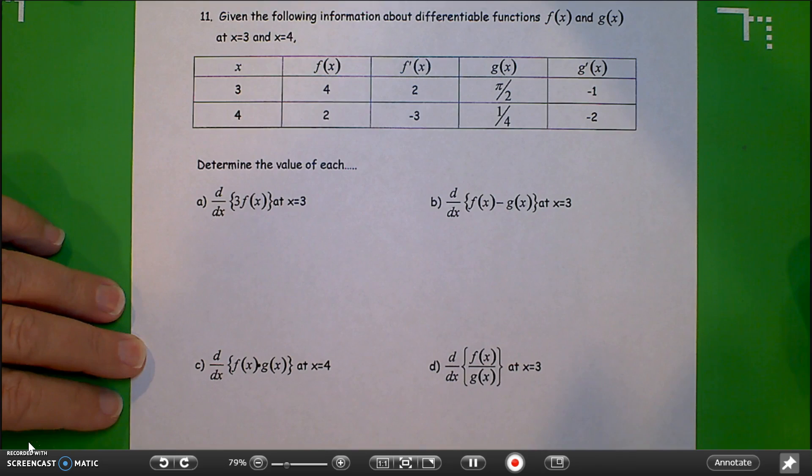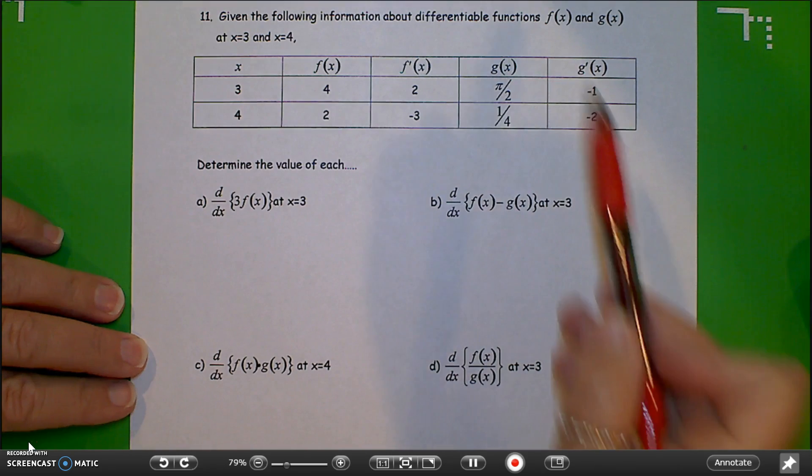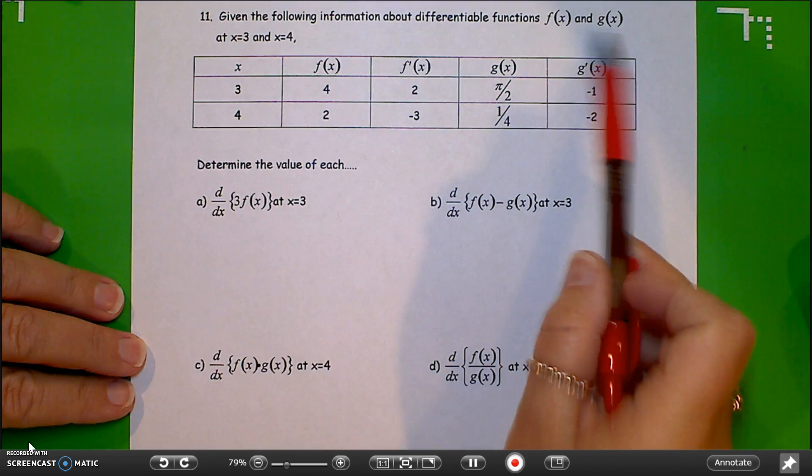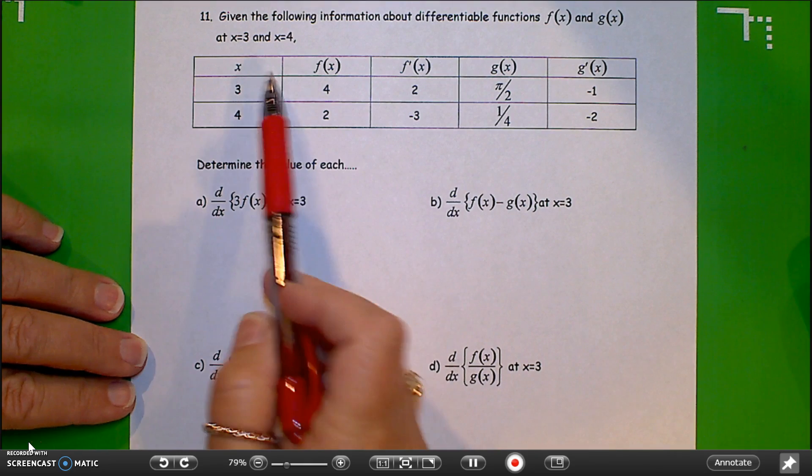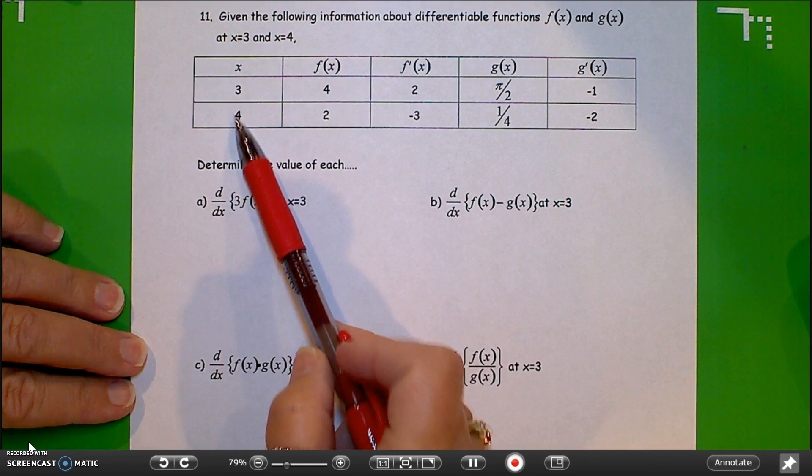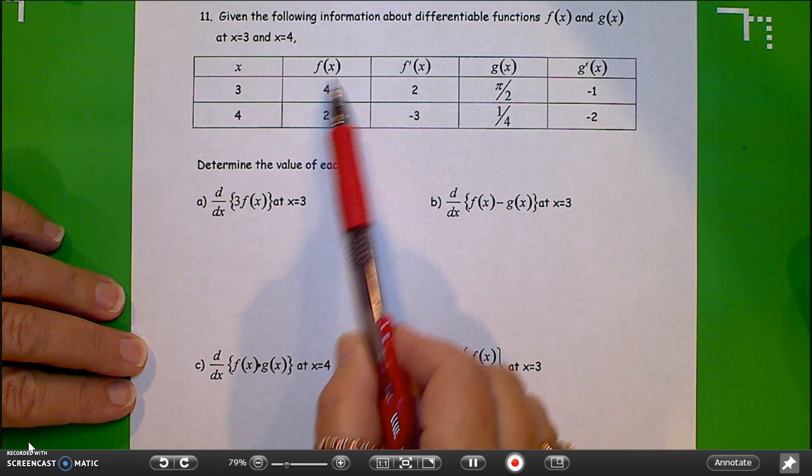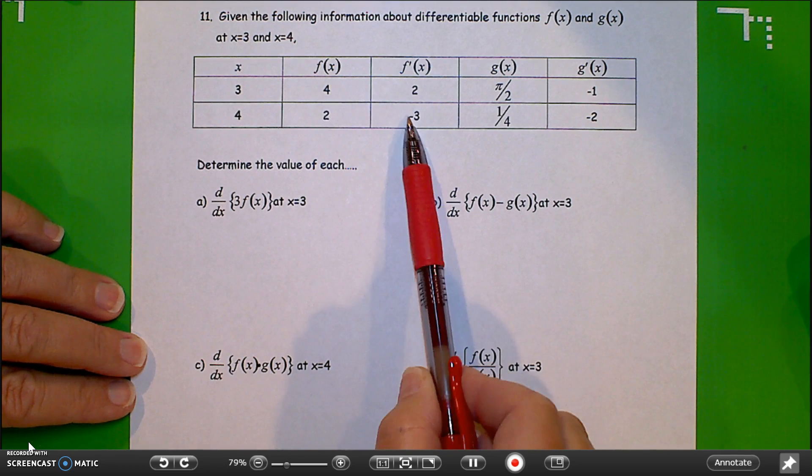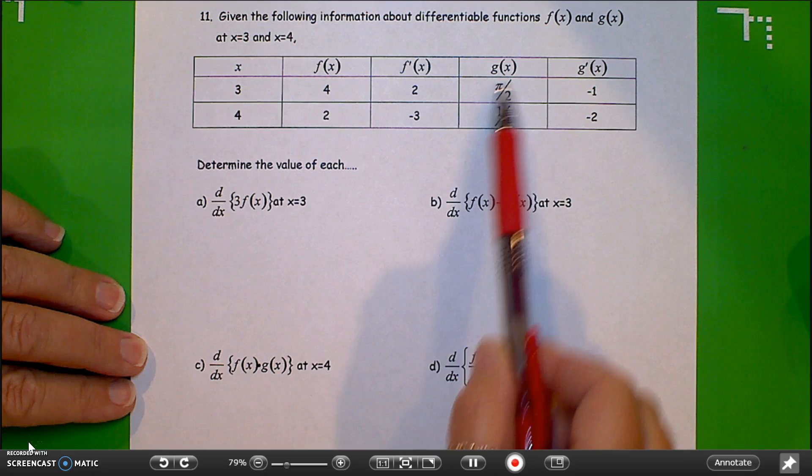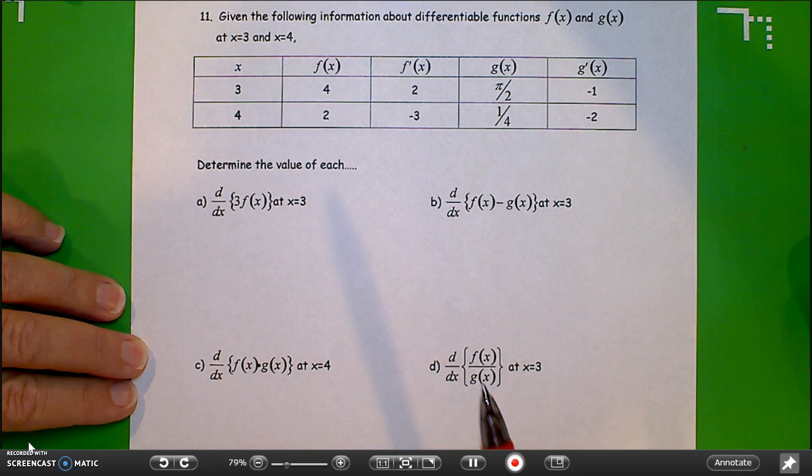In this case, we have a couple of differentiable functions, f and g of x, and three points of interest: x equals 3, x equals 4, and the table gives us the function values, the derivative values for g of x and f of x.